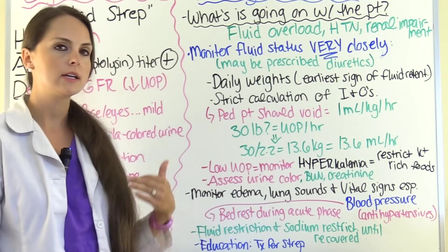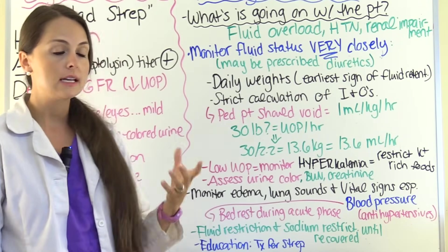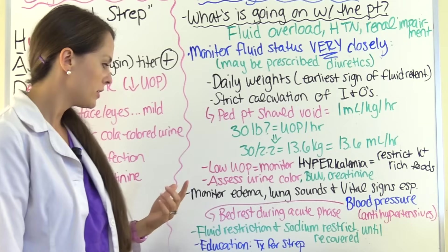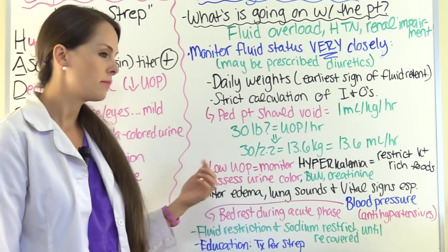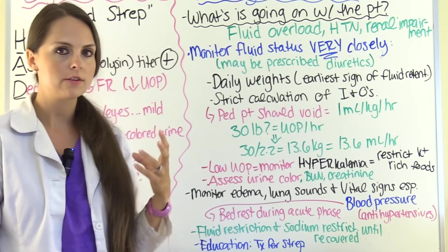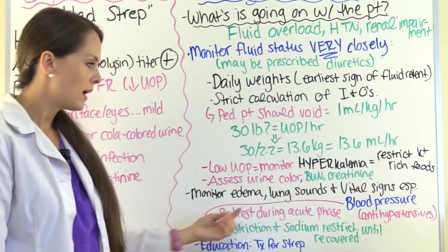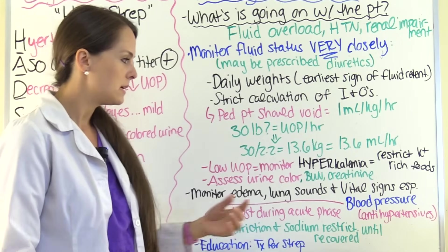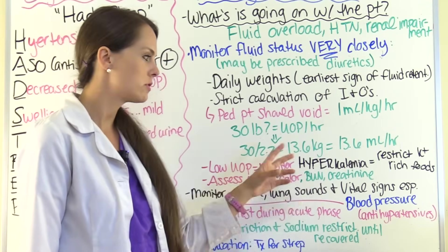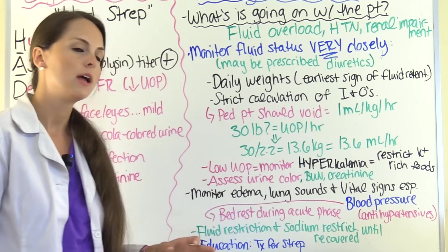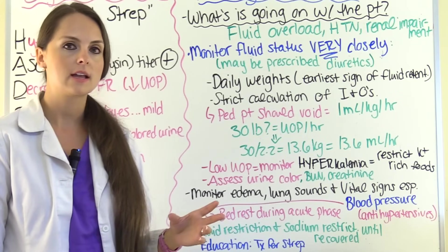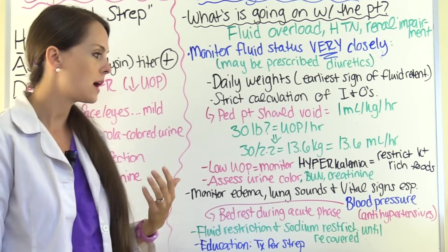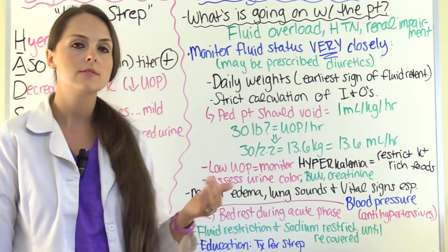Assess urine color — is it returning to normal from that tea or cola color? Monitor BUN and creatinine to track renal failure. Assess edema — is it decreasing in the face and eyes? Listen to lung sounds — are there crackles indicating pulmonary edema and fluid overload? And really monitor vital signs, especially blood pressure, because if hypertension is uncontrolled over a prolonged period it can lead to hypertensive encephalopathy.